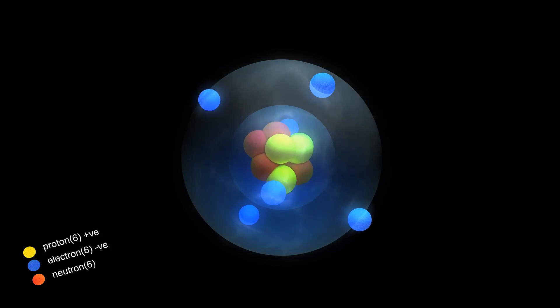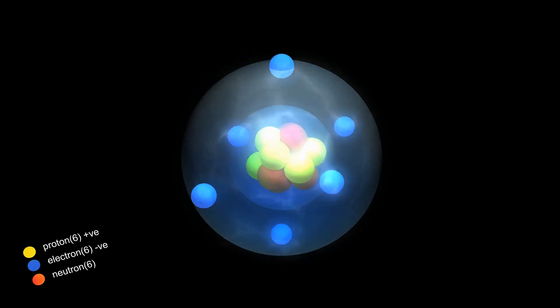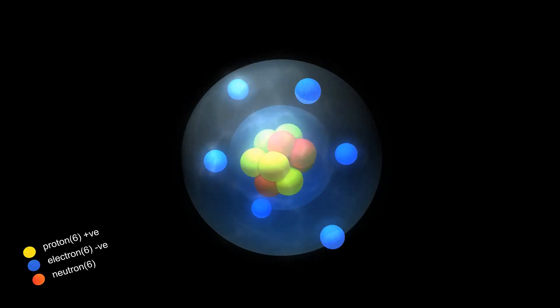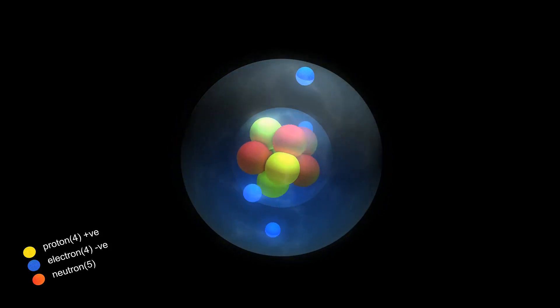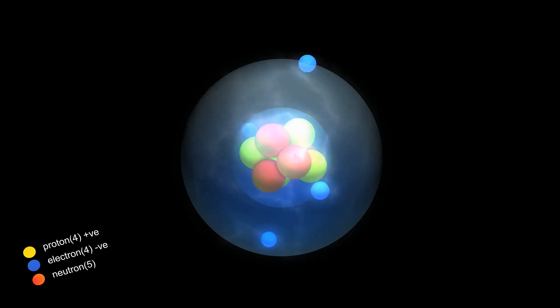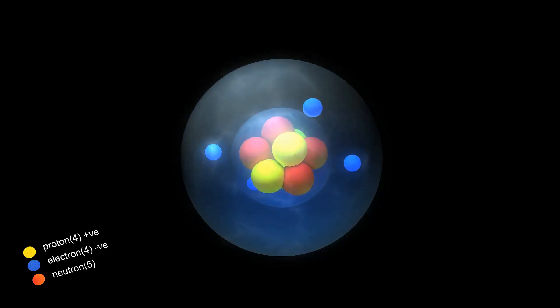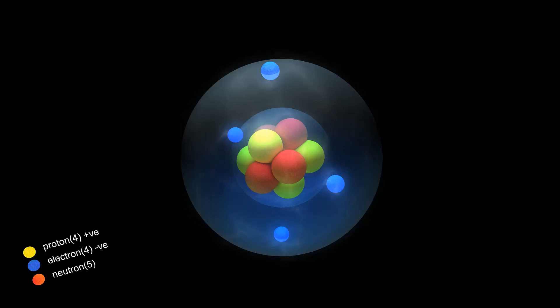Quarks, the building blocks of protons and other particles like neutrons, are peculiar creatures. They possess a property called color charge, analogous to electric charge, but with a crucial difference. It comes in three types, whimsically labeled red, green, and blue.